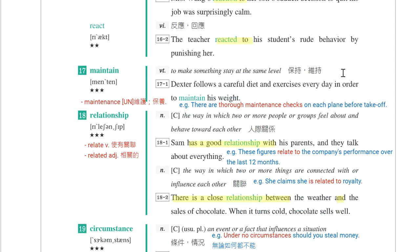第十七个单字是maintain，维持、保持。Dexter follows a careful diet and exercises every day in order to maintain his weight。他遵照很仔细的饮食还有每天都运动，为了要维持体重。Maintain one's weight。名词补充是maintenance。